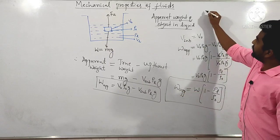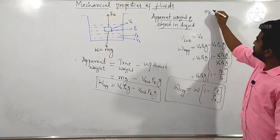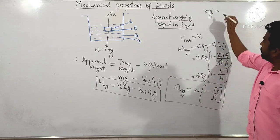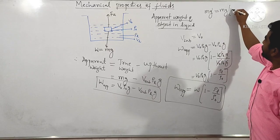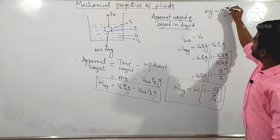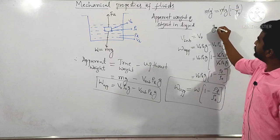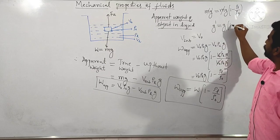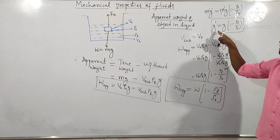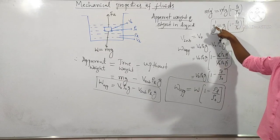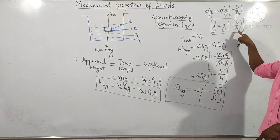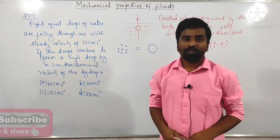Apparent weight can be written as mass multiplied by effective acceleration due to gravity g', which equals mass multiplied by g multiplied by (1 minus ρ_liquid divided by ρ_object). So when an object is placed in a liquid, the effective acceleration due to gravity varies as g times (1 minus density of the liquid to the density of the object).